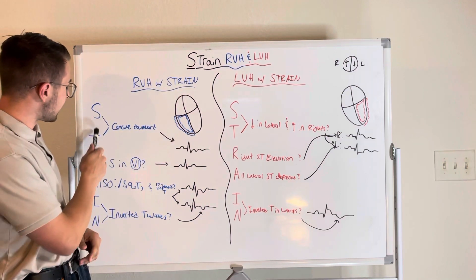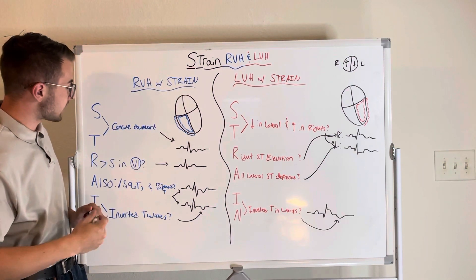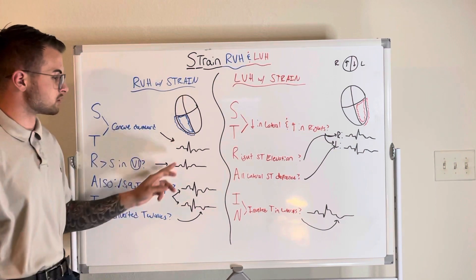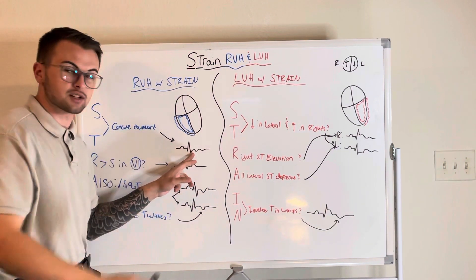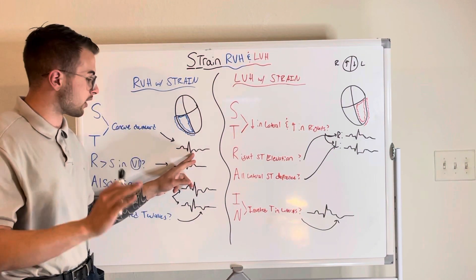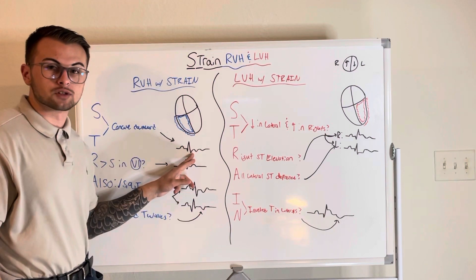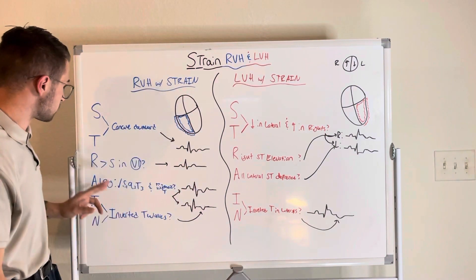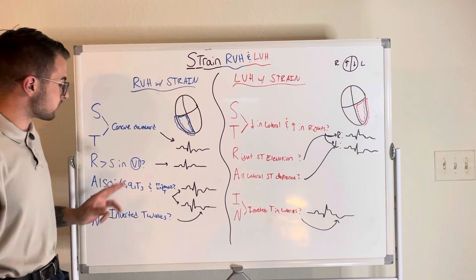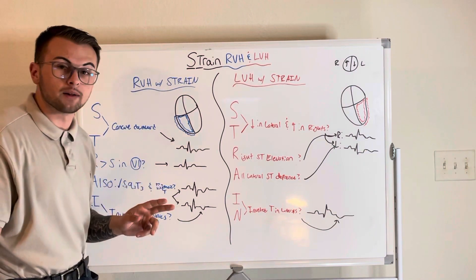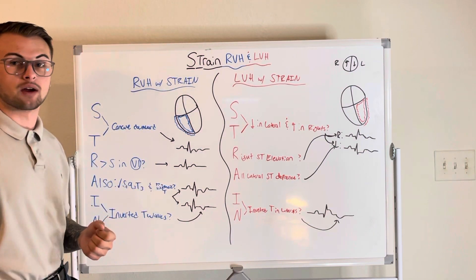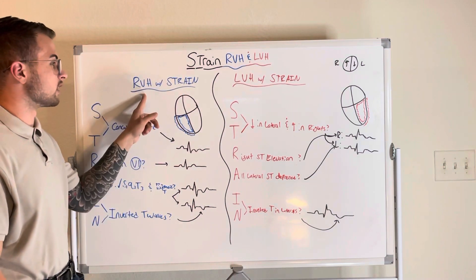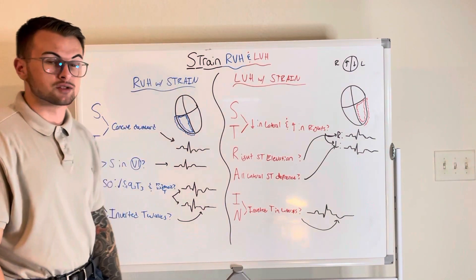The ST in STRAIN stands for ST concave downwards. As you can see here, it looks like somebody's taking a little ice cream scoop out of our ST segment — that's an indication of strain. The R stands for R that is greater than S in V1, which we know is the definition for right ventricular hypertrophy.